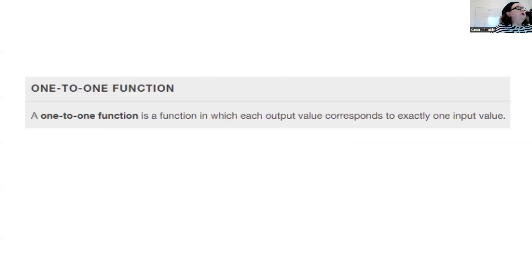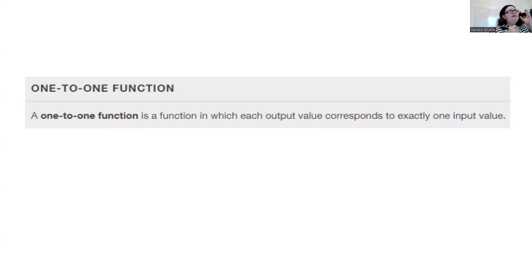One-to-one function: a one-to-one function is a function in which each output value corresponds to exactly one input value. We talked earlier about a function requiring every input to have one and only one output. For a one-to-one function, each input must have one and only one output AND each output must have one and only one input.